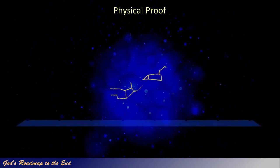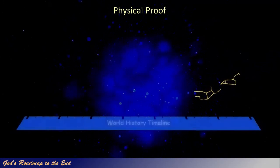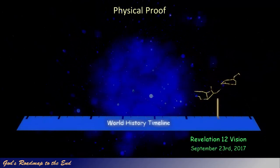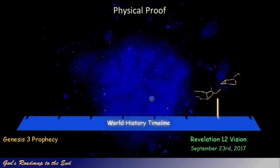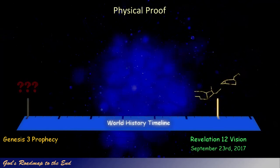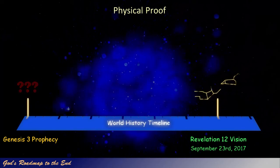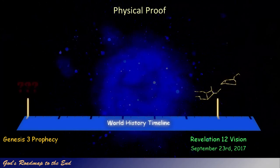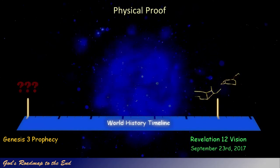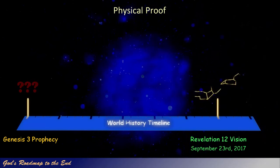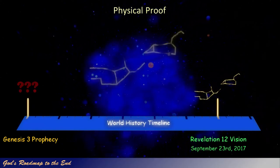After seeing how the vision given to John in Revelation 12 is marked with the physical celestial representation, and how it is linked to the prophecy given in Genesis 3 verse 16, I wondered if God would also mark the prophecy that was given to man in the Garden of Eden with a similar celestial marker. This, in my opinion, would confirm and provide physical proof for the fact that we are indeed looking at the correct prophecy and vision that Daniel was told to seal up.